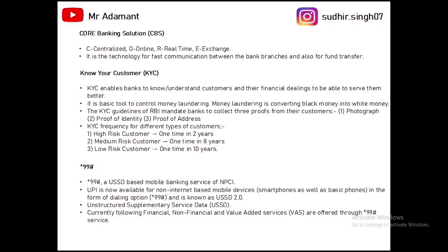Next is KYC — Know Your Customer — basically used for collecting customer details like address proof, identity proof, and photographs. It is a tool for controlling money laundering, which is converting black money to white money through illegal activities. For a proper KYC, we collect three proofs: photograph, proof of identity, and proof of address. KYC frequency differs by customer risk level: high-risk customers — once in two years; medium-risk customers — once in eight years; low-risk customers — once in ten years. Normal customers are typically low-risk, while businessmen and wealthy individuals fall in high or medium risk.